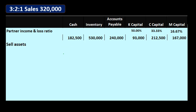We're going to sell the assets. Remember, we always have to go in order: sell the assets, apply the gain or loss on sale to the capital accounts in accordance with profit sharing, check for negative capital account problems, pay off the liabilities with the cash received, and then pay the partners. Going in this order causes the fewest problems, such as negative capital accounts — though even in order it won't always eliminate them.